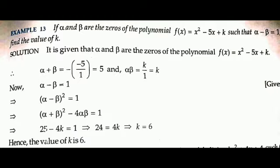Moving ahead, let us consider another question. If alpha and beta are the zeros of the polynomial f(x) = x² - 5x + k such that α - β = 1, find the value of k. From the polynomial: α + β = -(-5)/1 = 5, and αβ = k/1 = k.